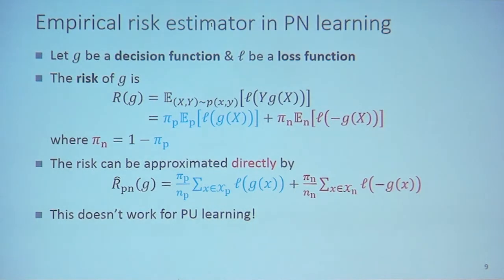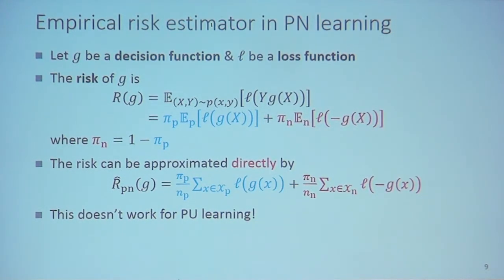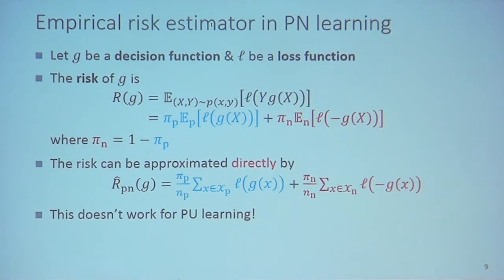This is a brief review of empirical risk minimization in supervised learning. Let G be the decision function and L be a loss function — L can be any classification-calibrated surrogate loss. The risk or expected risk of classifier G is defined as the expectation over the underlying joint density of the loss of the margin, where Y times G(X) is the margin. We can decompose this because π is known, giving us the empirical risk estimator in PN learning.